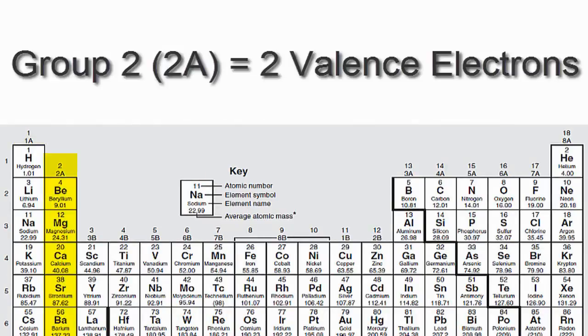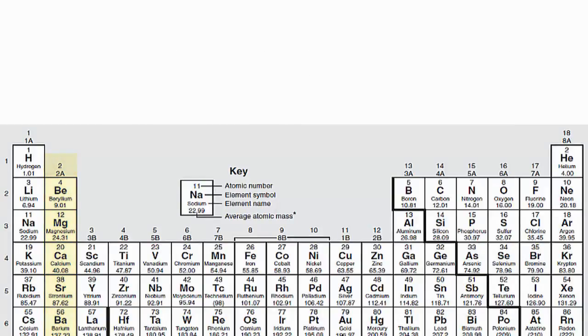If you look at group 2 or 2A, you'll see that those elements have two valence electrons. We'll skip over the transition metals since they're a bit more complicated and probably don't apply to you.